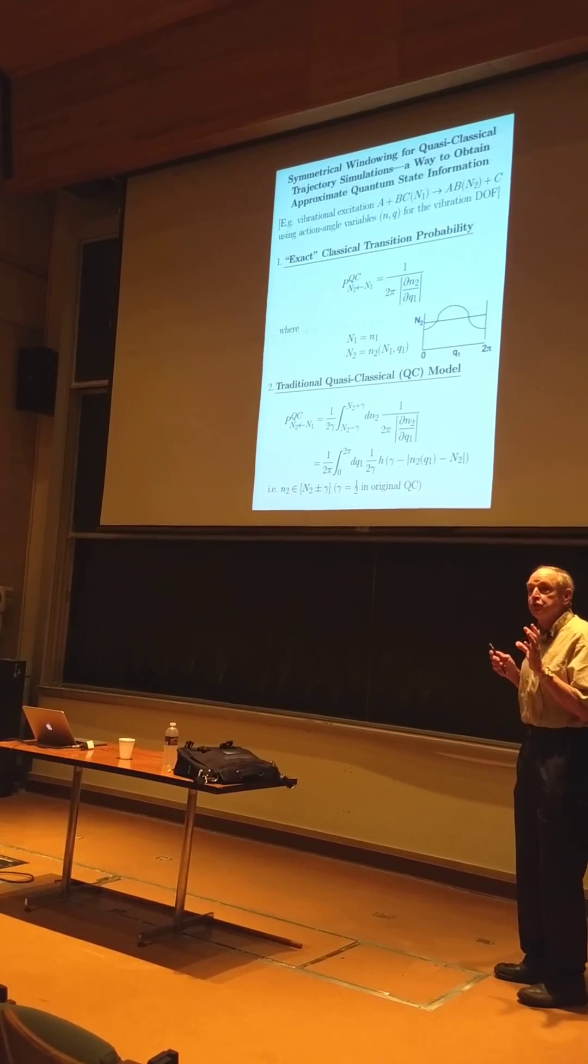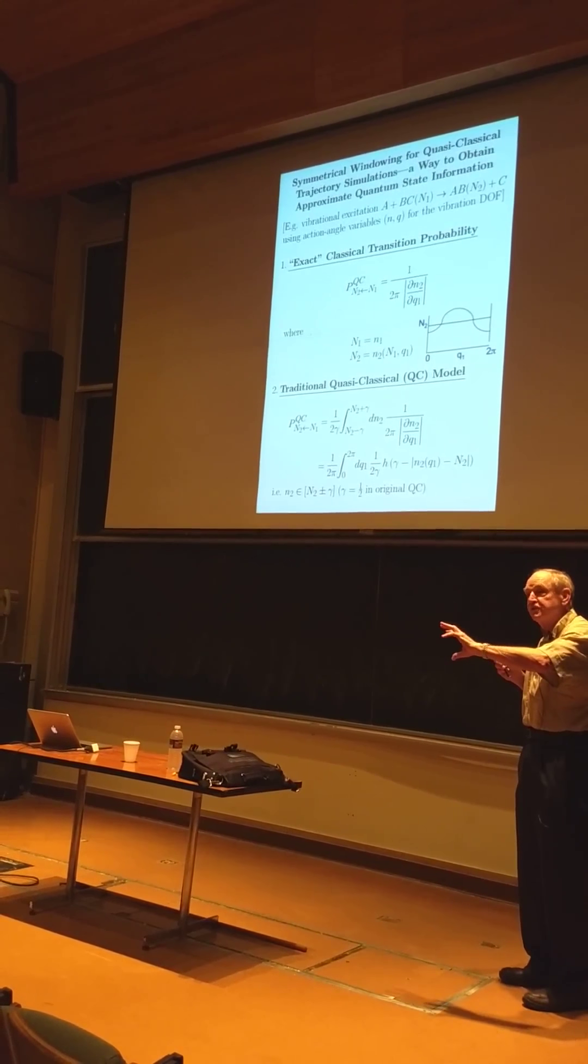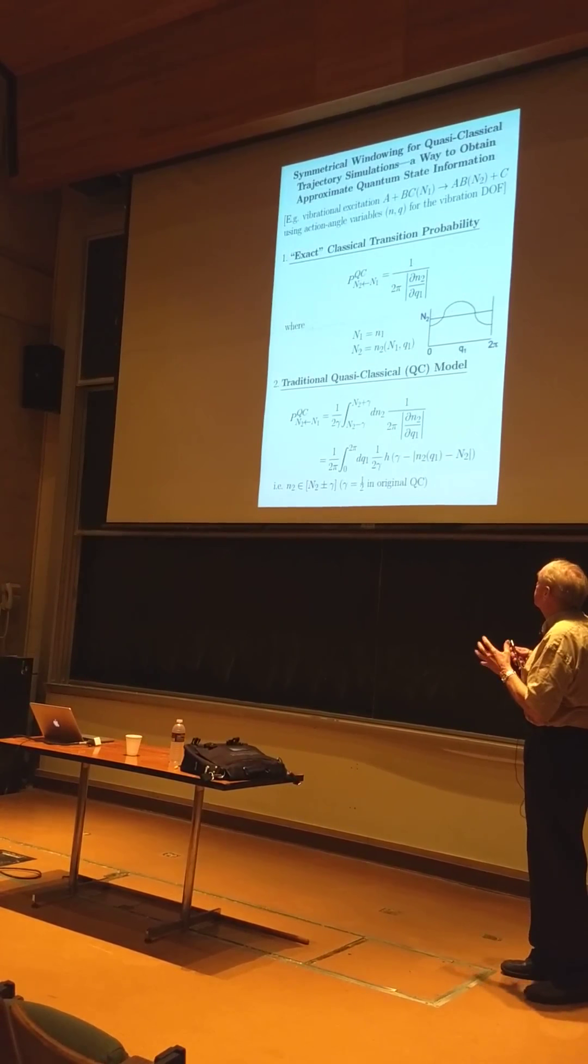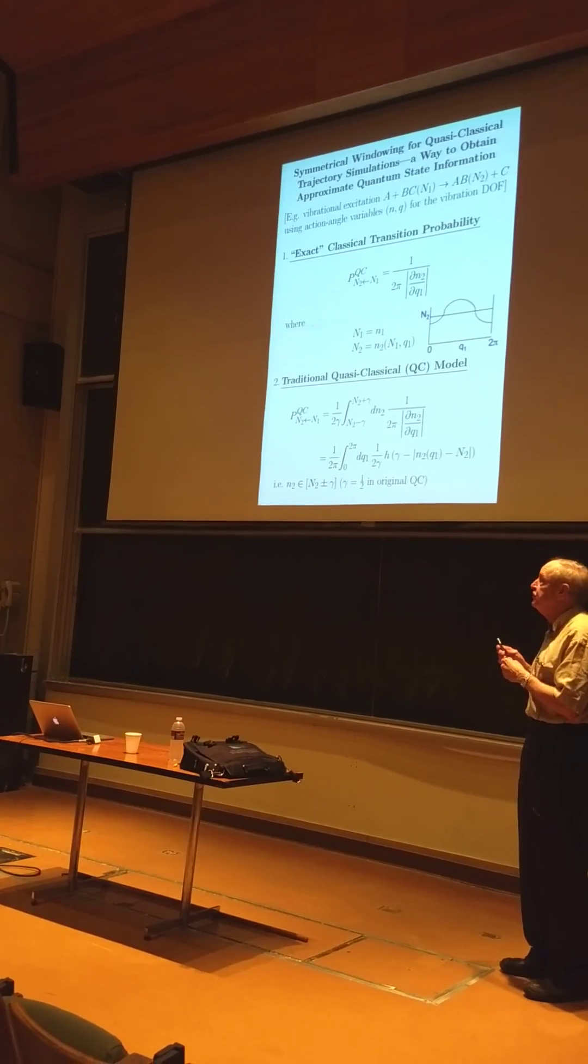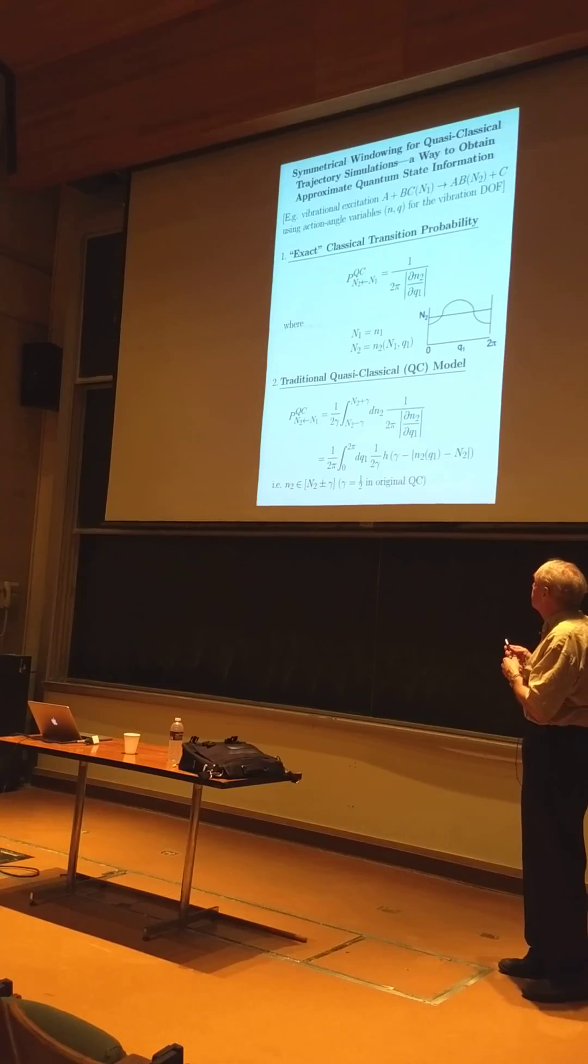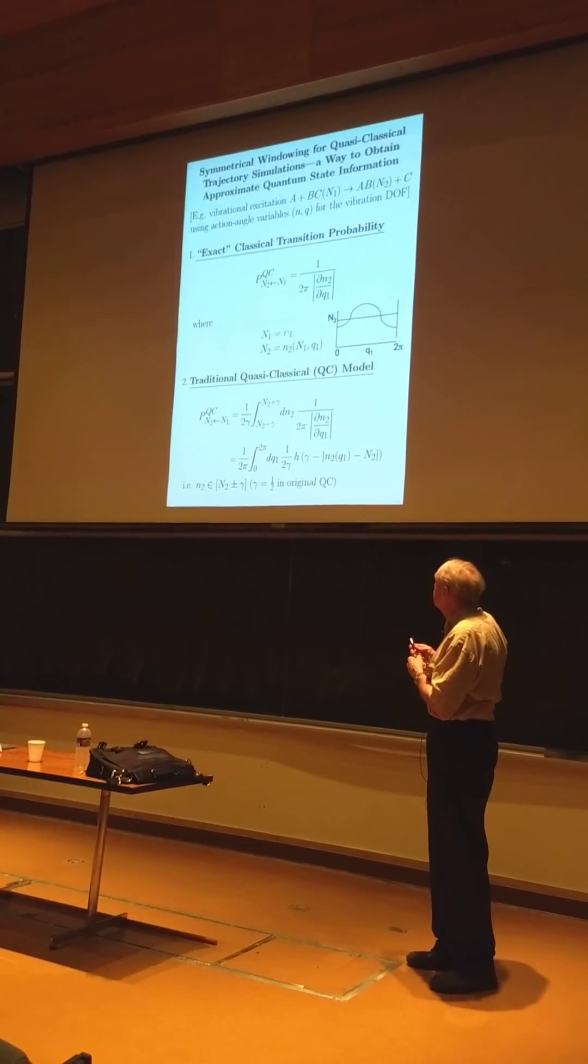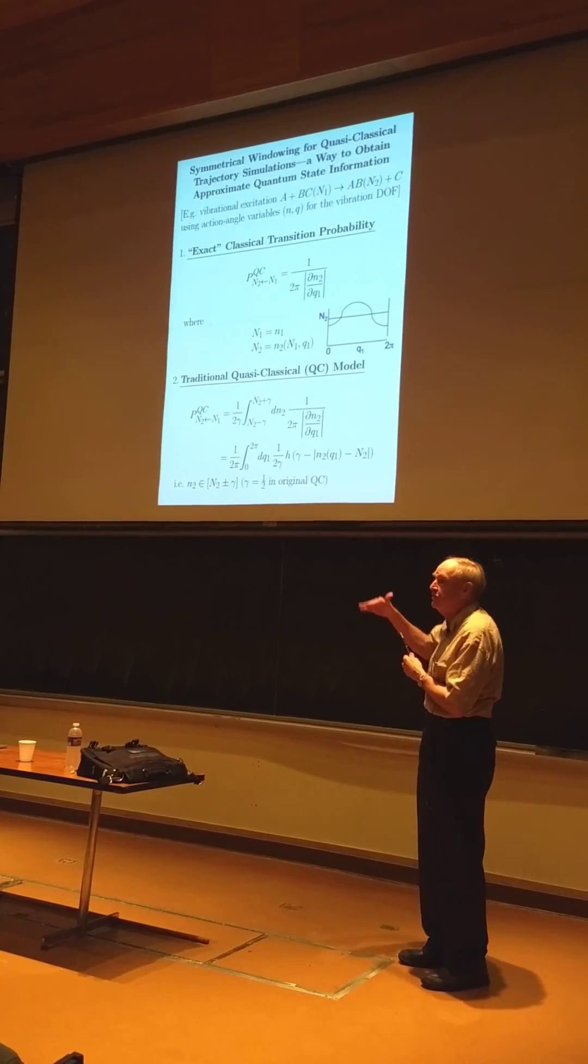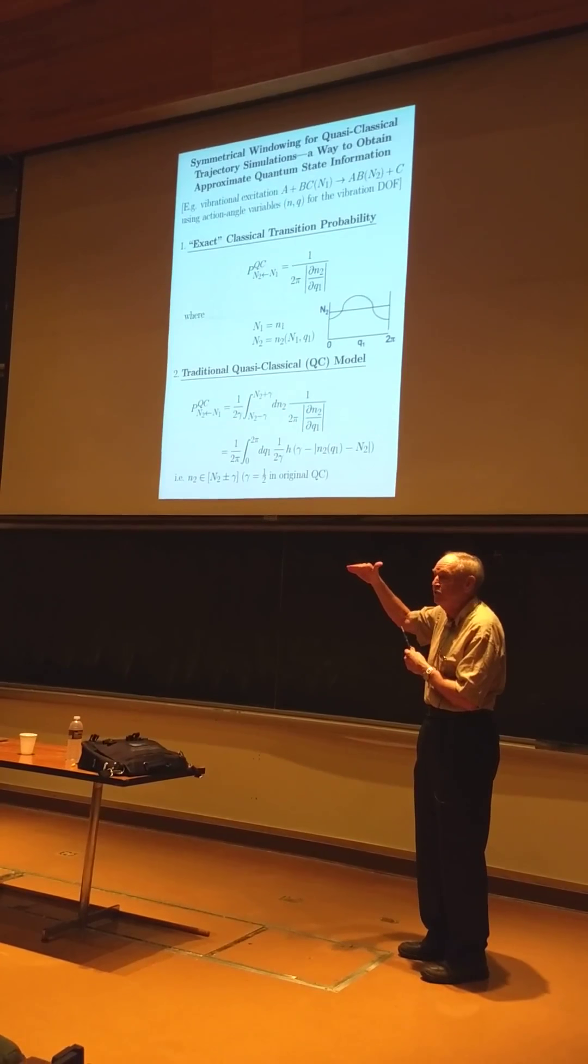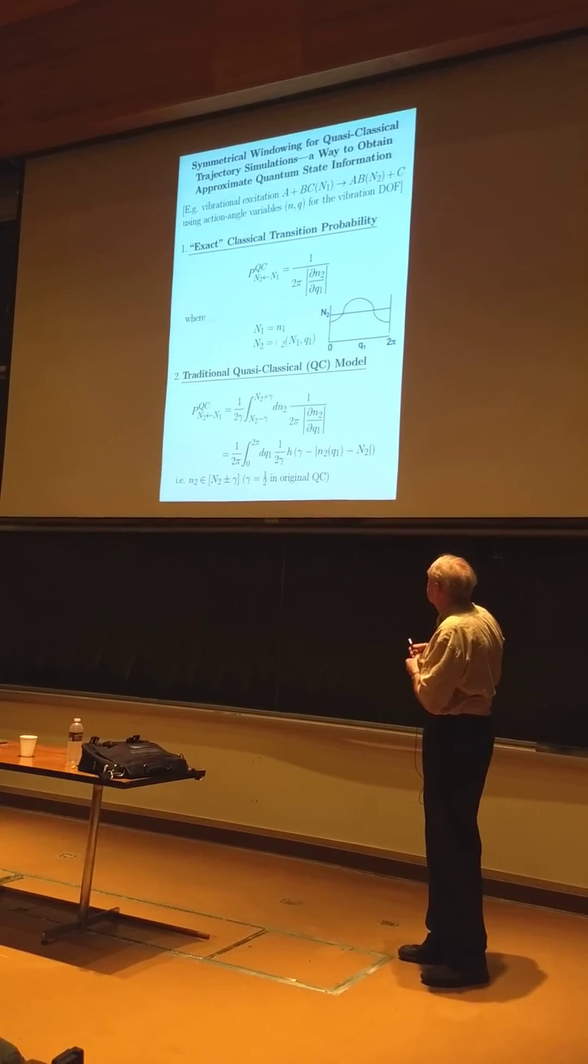How do we do vibrational inelastic transitions in the old days? Well, there's a rigorous way to do that that came out of early semiclassics. And, really, we want to go from one quantum state, from one integer value. The initial action should be an integer. That's that initial vibrational state. And the final action should be an integer.